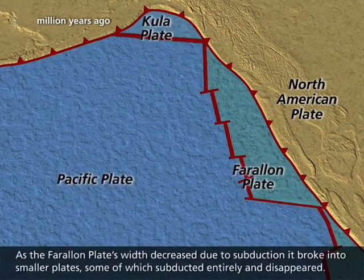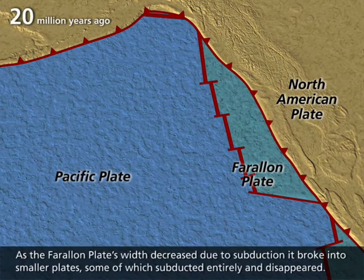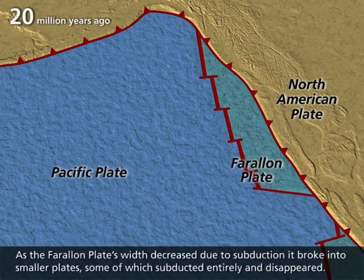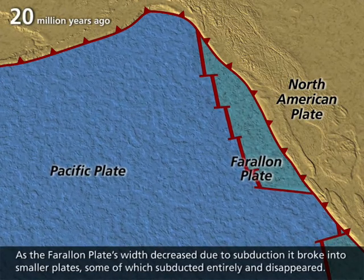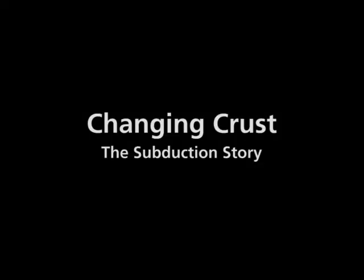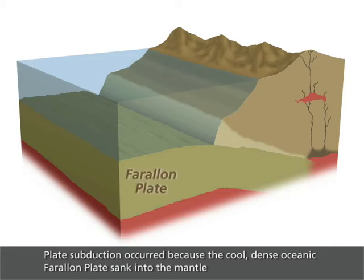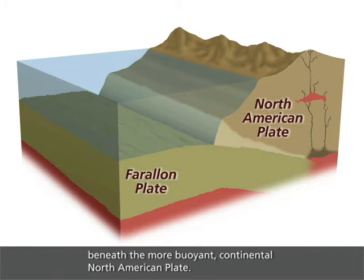As the Farallon plate's width decreased due to subduction, it broke into smaller plates, some of which subducted entirely and disappeared. Plate subduction occurred because the cool, dense, oceanic Farallon plate sank into the mantle beneath the more buoyant continental North American plate.